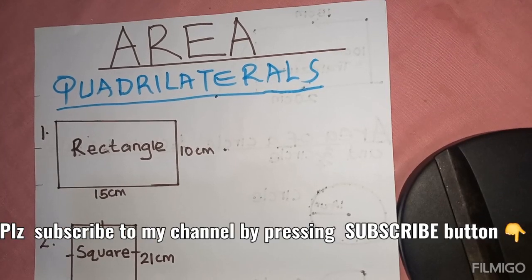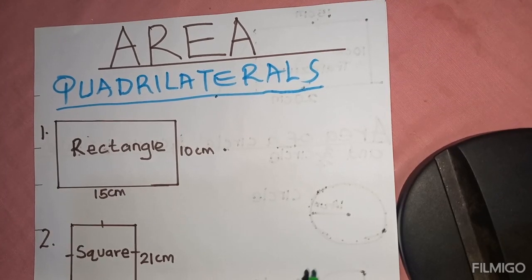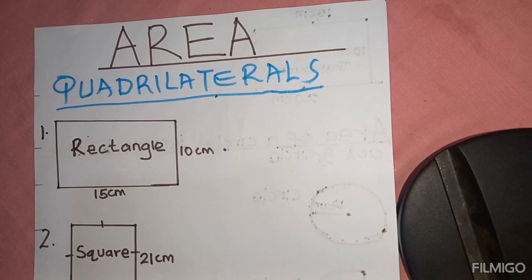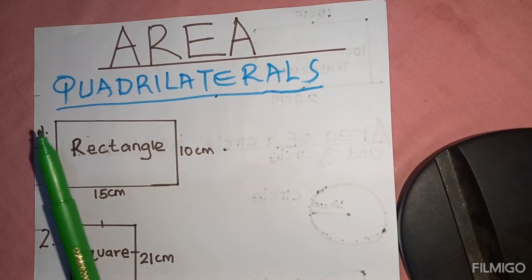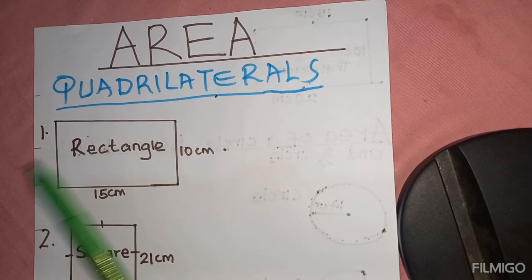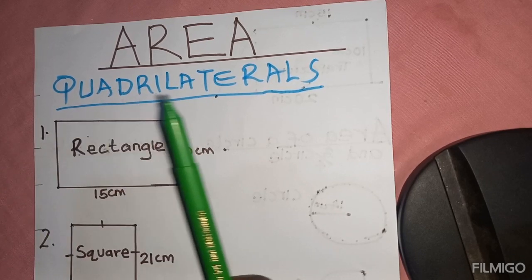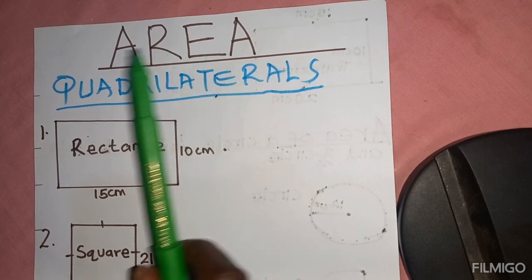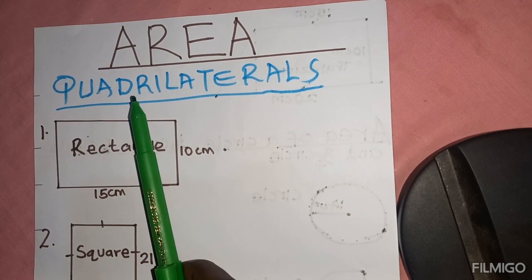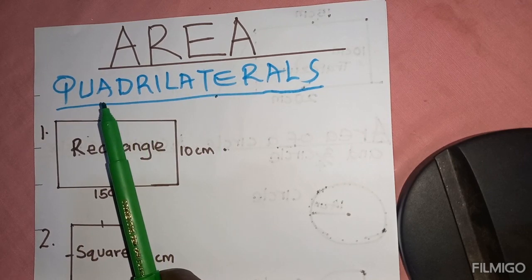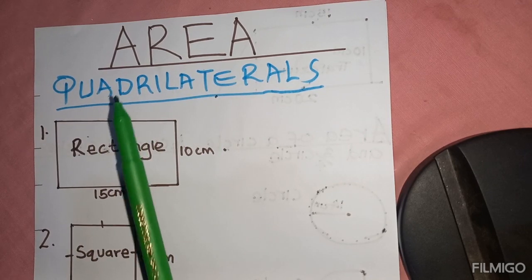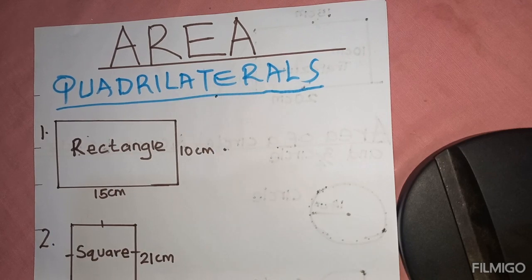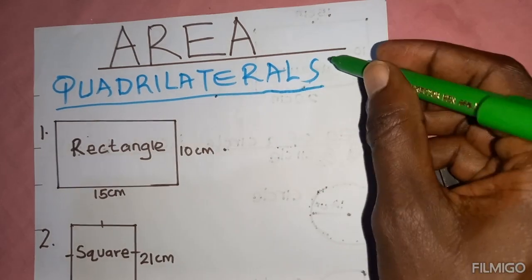Hi, today we are going to have a consolidated revision. We are going to revise on area, and the first area that we are going to deal with is the area of quadrilaterals.